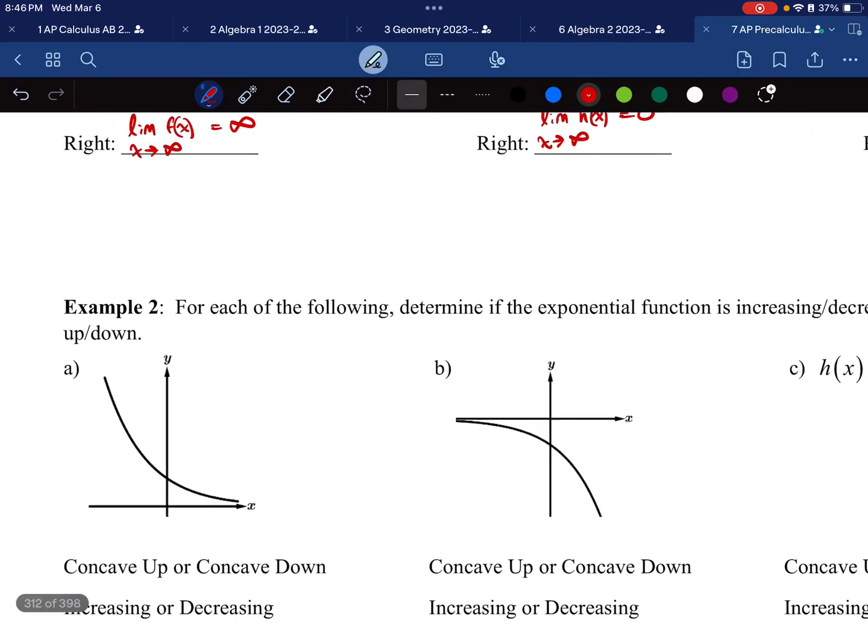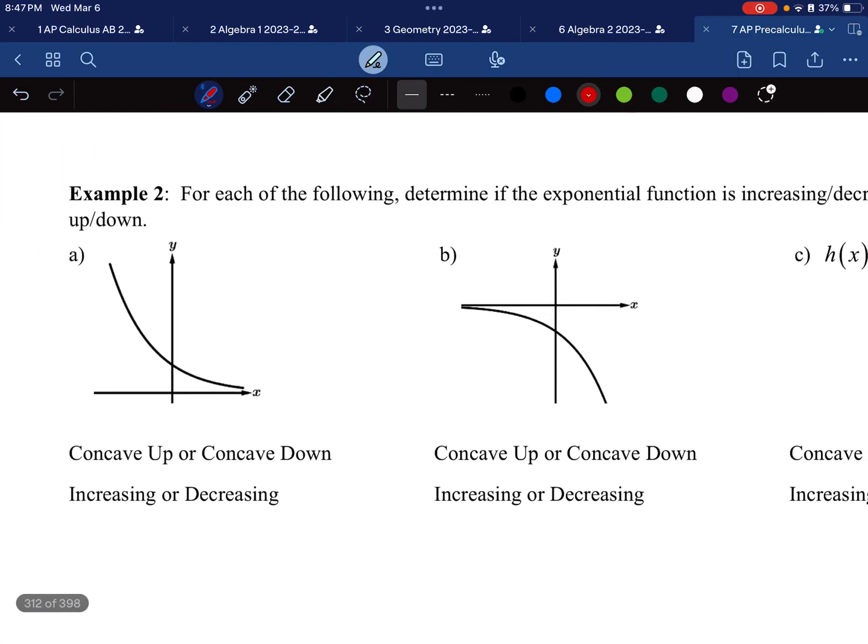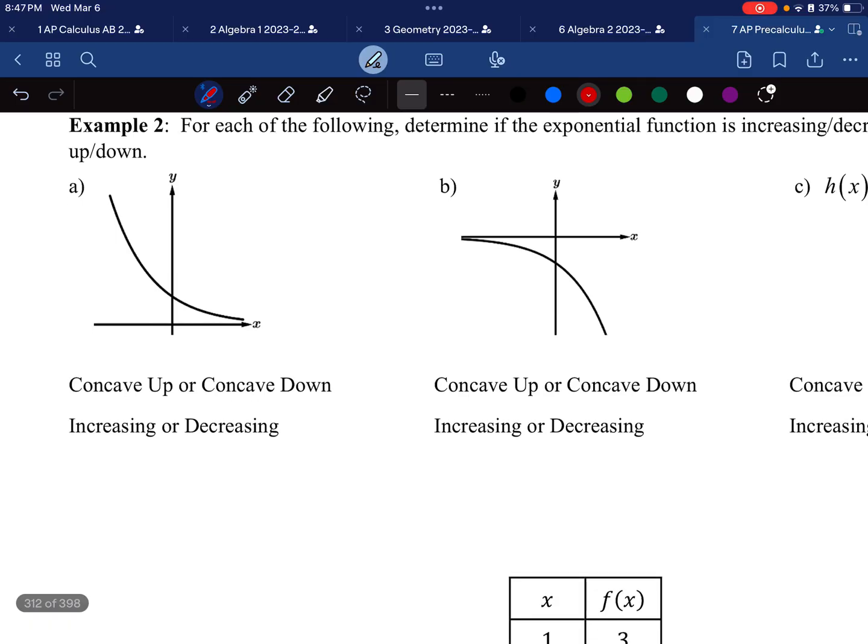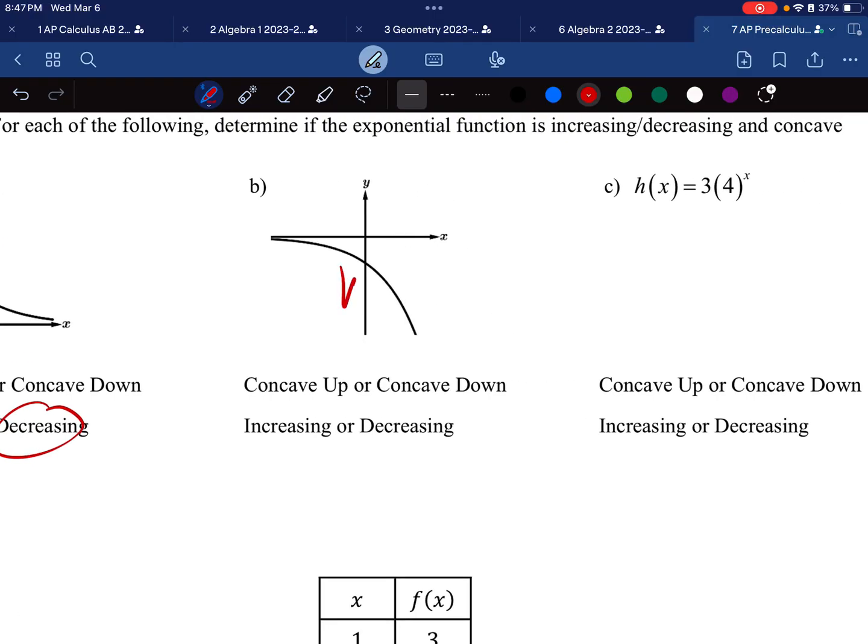Now we need to determine if we're concave up, concave down, and determine if we're increasing or decreasing. You can see that the height here is going down, down, down, down, down. So we are decreasing. And this is purely concave up. So, it's concave up and decreasing. This next one is clearly concave down, and these heights are getting lower and lower and lower, so the heights are decreasing.